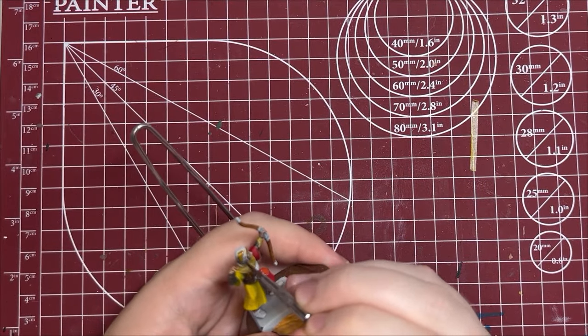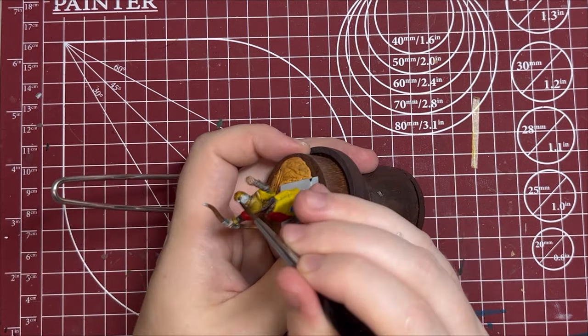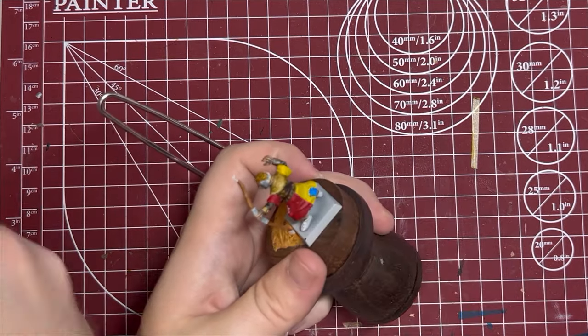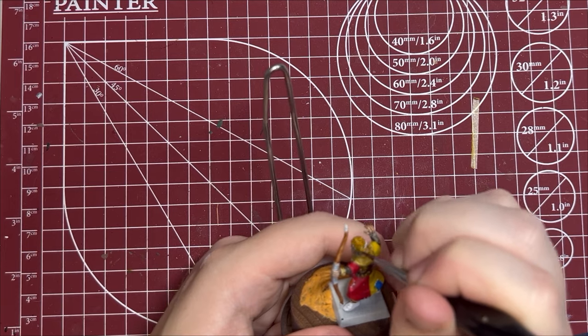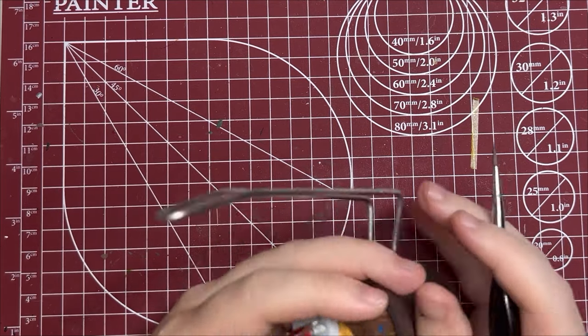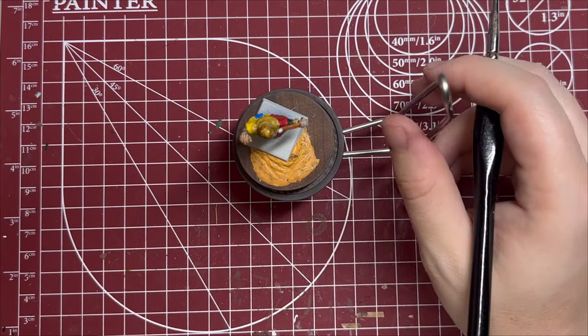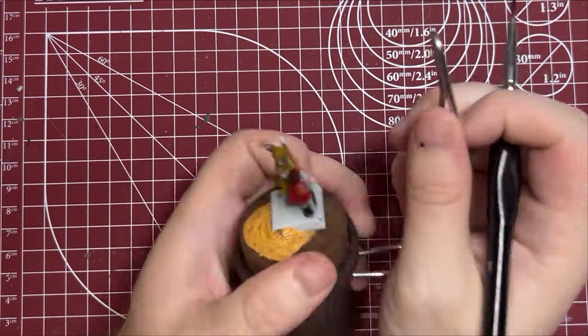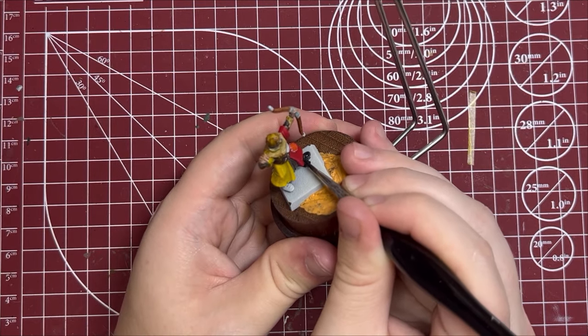Now for his hat, we are going back to Snakebite Leather. Now I'm just going to very quickly do his shoes and Black Templar, another contrast paint. I don't steal from Citadel. Apparently I have too much money and so I have to buy the most expensive hobby paints.